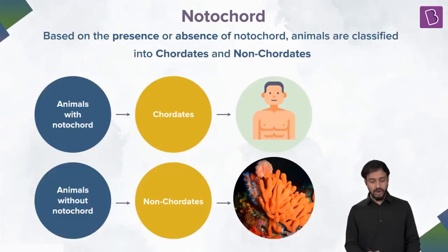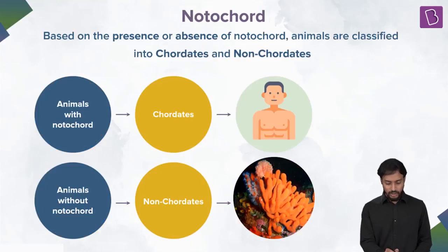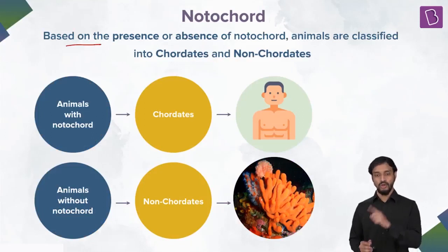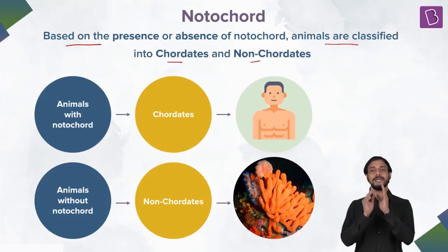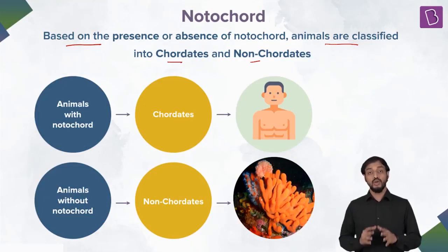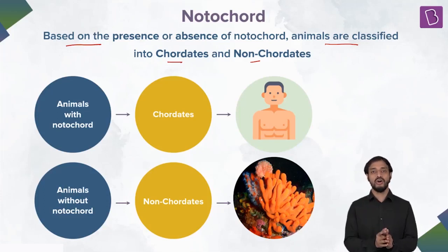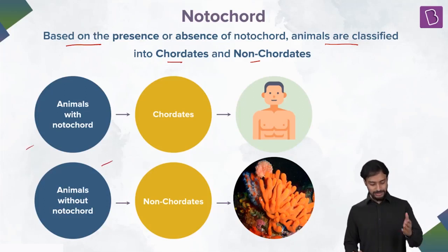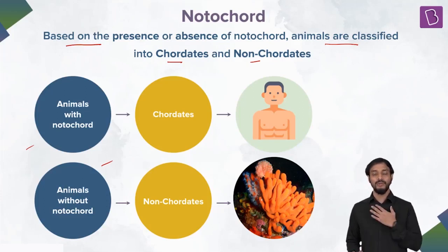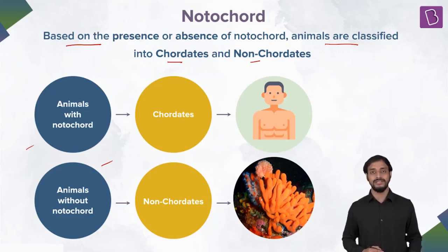Based on the presence or absence of the notochord, animals are classified into chordates and non-chordates. Animals that have the notochord are chordates; those that do not are non-chordates. For example, Porifera are non-chordates, while we human beings are chordates — and to be more precise, we are vertebrates.